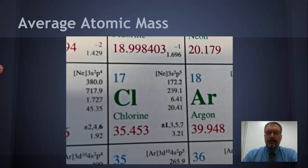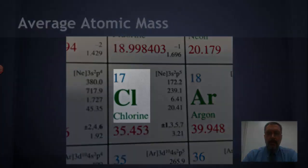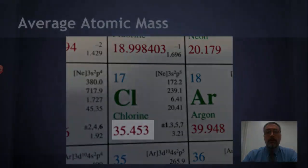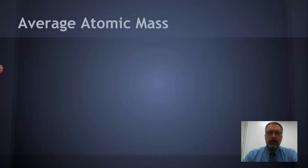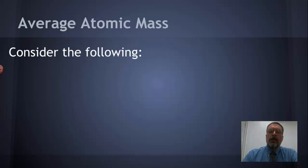Now on the periodic table we have a lot of information, obviously the atomic number and the symbol and the name, and then below it in red we have what's called the average atomic mass. But there's something interesting about this average atomic mass and we need to look at this for a second. We'll take an example using chlorine still.